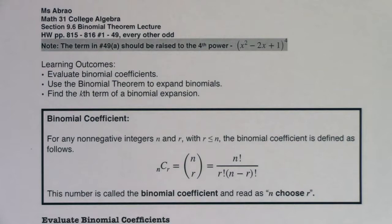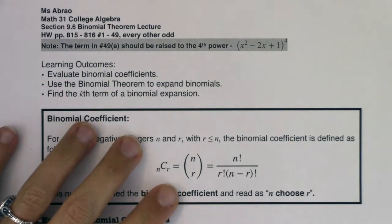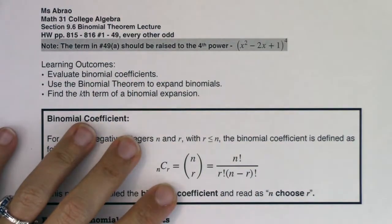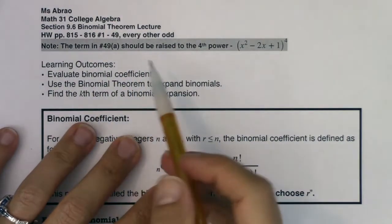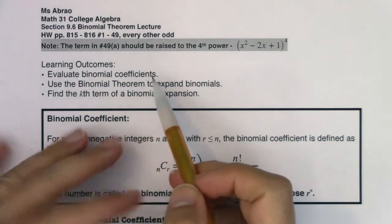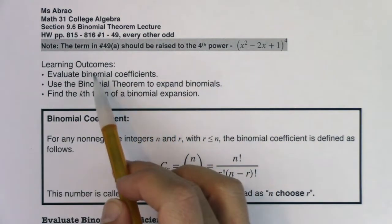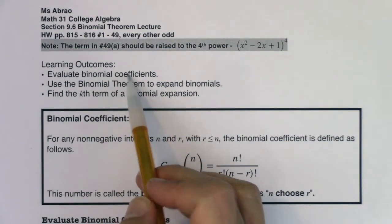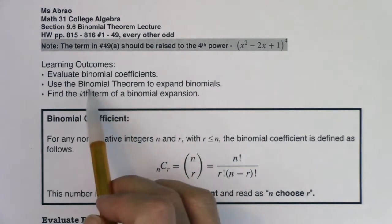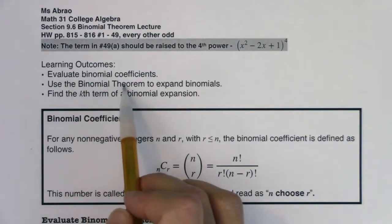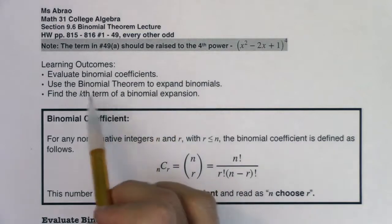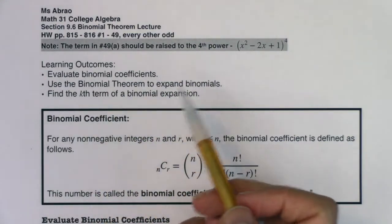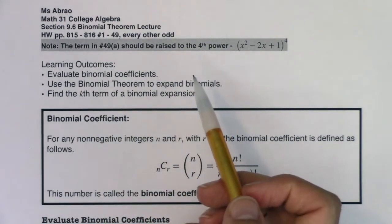Hey Math 31, welcome to section 9.6. In 9.6 we're going to learn about the binomial theorem. By the end of this section, I want us to be able to evaluate binomial coefficients, use them in the binomial theorem to expand binomials, and then find the kth term of a binomial expansion.